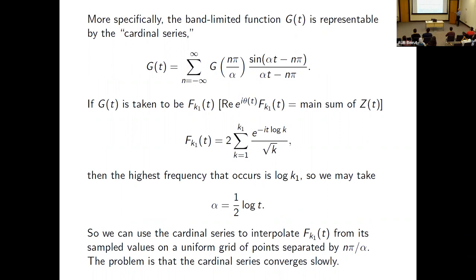The explicit formula for this is the cardinal series: g(t) equals an infinite sum involving the samples. Our main sum in the Riemann–Siegel formula is band-limited — its highest frequency is t·log K₁ where K₁ is the length of the main sum, bounded by √t, so α ≈ (1/2)·log t. We can therefore apply interpolation to the R-S main sum to speed up computations at nearby points.